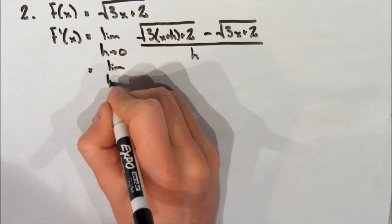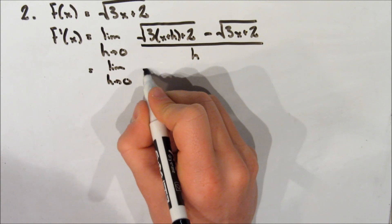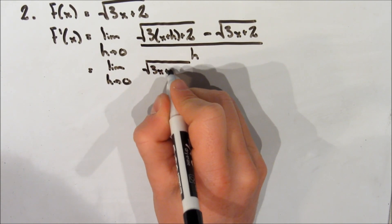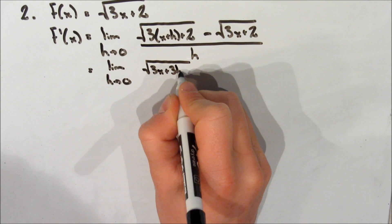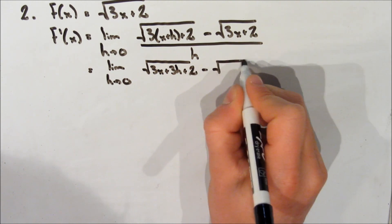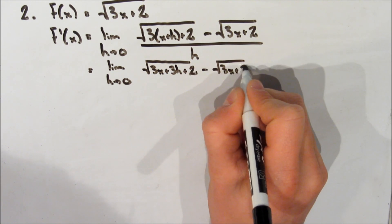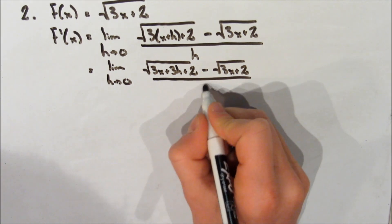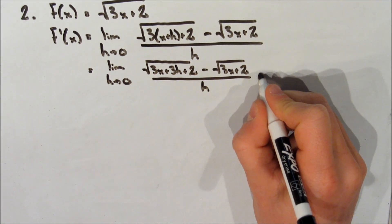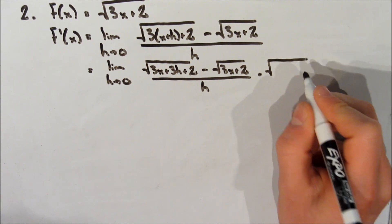On the next line, we expand the terms inside the square root. So we get the square root of 3x plus 3h plus 2, minus the square root of 3x plus 2, over h. We perform the same conjugate multiplication trick as last time.